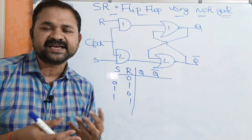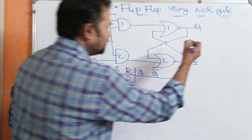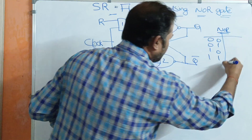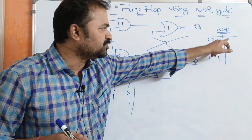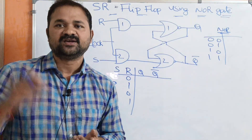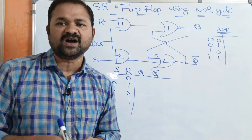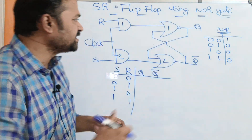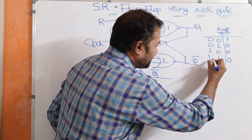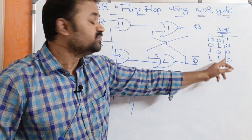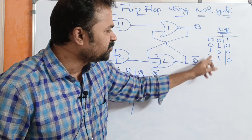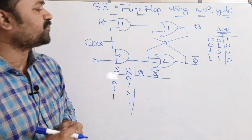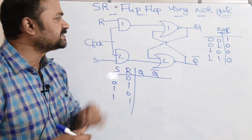Here we have a NOR gate, so let us analyze the NOR gate truth table also. The inputs are 00, 01, 10, and 11. For an OR gate, if both inputs are 0 then the output is 0, otherwise the result is 1 — giving outputs 0, 1, 1, 1. NOR gate is the reverse of the OR gate, so the outputs become 1, 0, 0, 0. The key property: if one of the inputs is 1 in a NOR gate, then the output is 0, regardless of the second input. Whereas if both inputs are 0, then the output is 1.